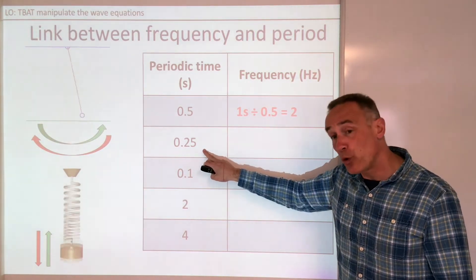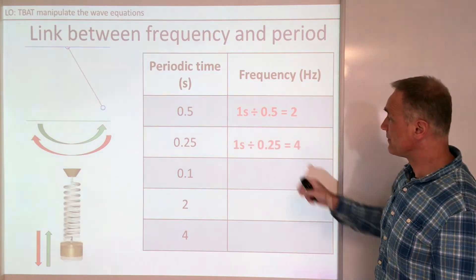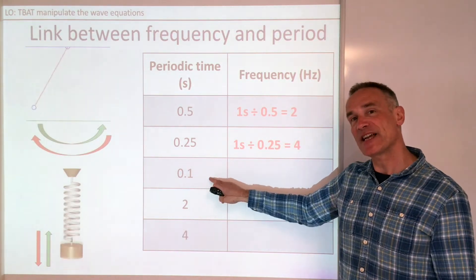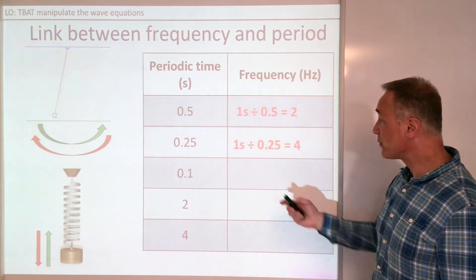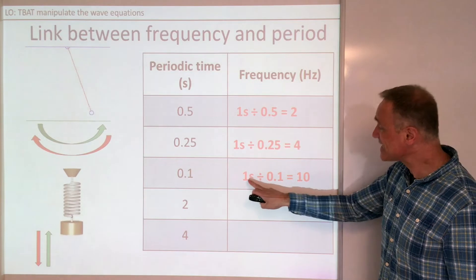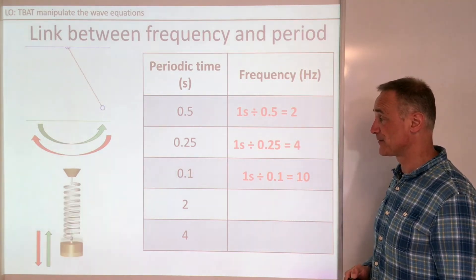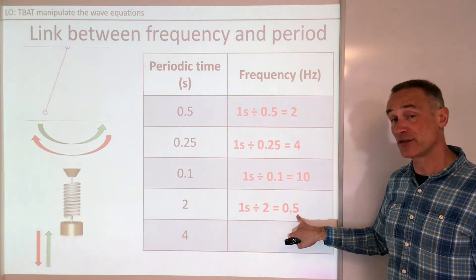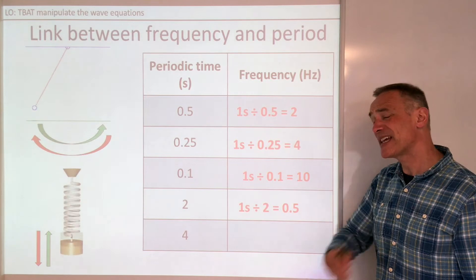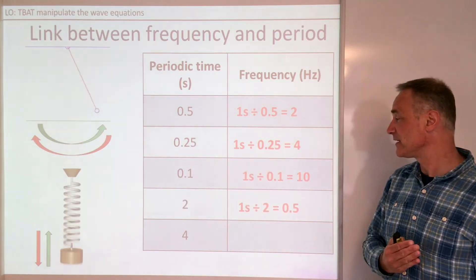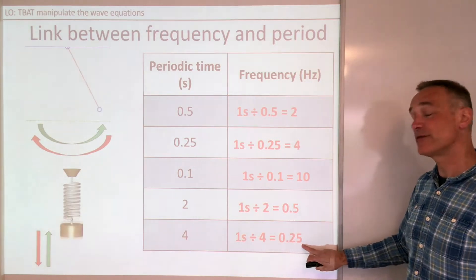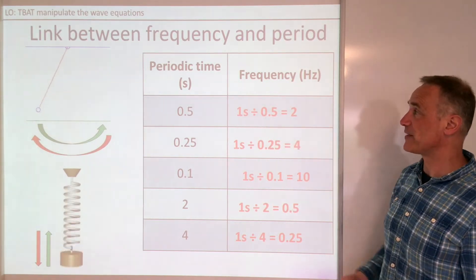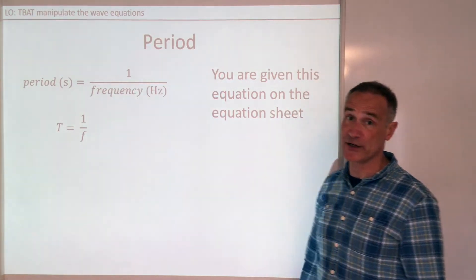If the period is a quarter of a second, you can fit four oscillations in — one second divided by 0.25. If it only takes a tenth of a second to do one oscillation, then 1 divided by 0.1 is 10, so 10 oscillations per second, which is 10 hertz. If it takes two seconds, you only do half an oscillation per second. If it takes four seconds, you can only fit 1 divided by 4 equals 0.25 oscillations per second. So frequency is one divided by the period.